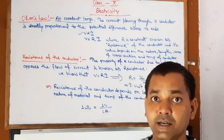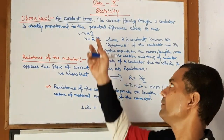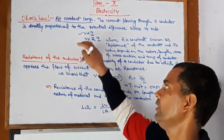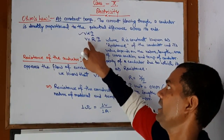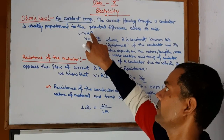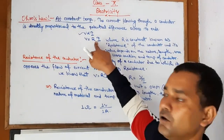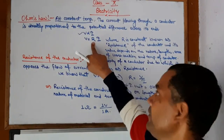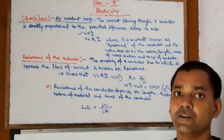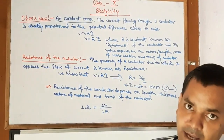Whenever the directly proportional sign is removed, a constant is added. We remove the proportional sign, put an equal sign, and a constant is added. That constant is named R. Where R is a constant that is known as the resistance of the conductor.